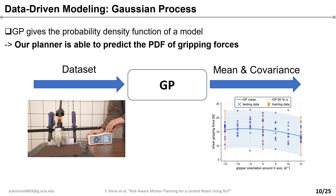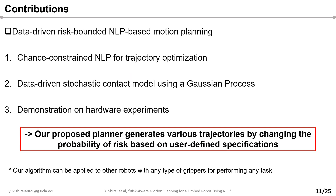The second contribution is that by employing GP, we can get an explicit stochastic model of gripping. This enables the planner to consider the PDF of gripping forces, which is necessary for the trajectory optimization process. Therefore, we propose a motion planning algorithm formulated as a data-driven risk-bounded NLP for limb robots. We verify our proposed algorithm on an 11 kg hexapod robot with spine grippers for multi-surface climbing. Note that while we focus on robotic climbing with spine grippers in this presentation, our proposed planner can be applied to other motion planning problems as long as the robot has contact points with stochastic models.